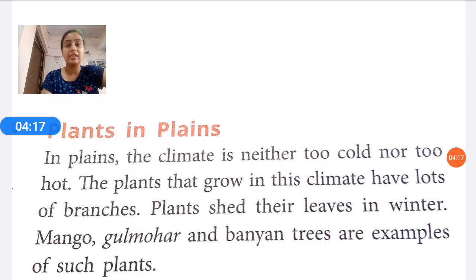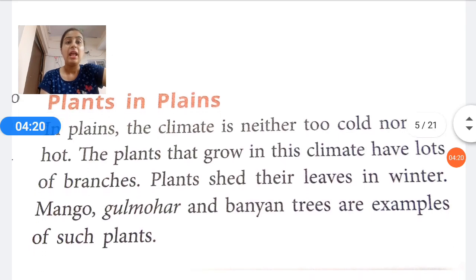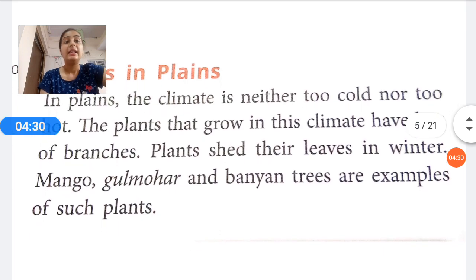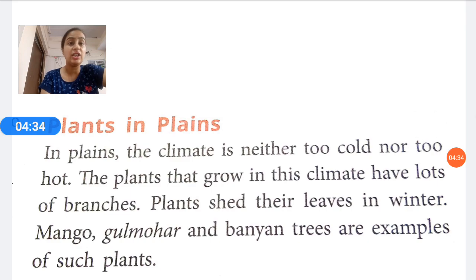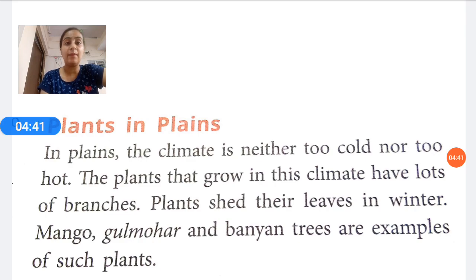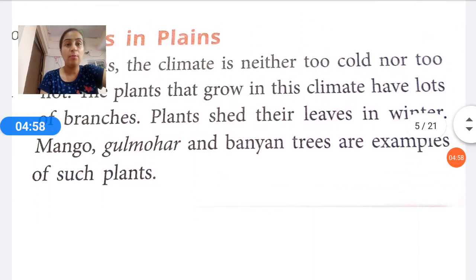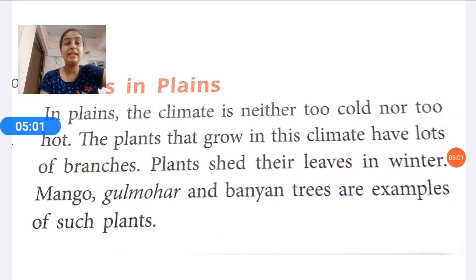Plants in the plains: in plains, the climate is neither too cold nor too hot. The plants that grow in this climate have a lot of branches. Plants shed their leaves in winter. Mango, gulmore, and banyan trees are examples of such plants. So plants in the plains shed their leaves in winter and they have a lot of branches.